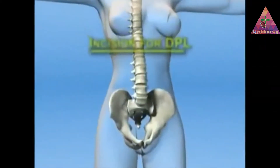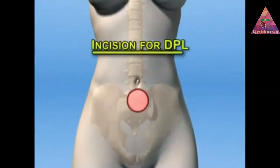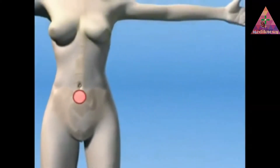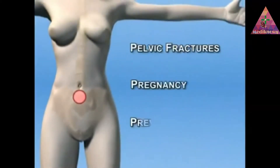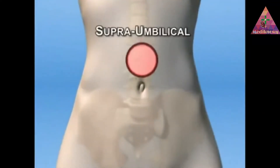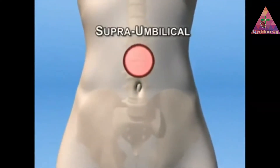The incision for a DPL is usually placed infra-umbilically. In the case of pelvic fractures, pregnancy, or previous lower midline incisions, a supra-umbilical incision may be used.